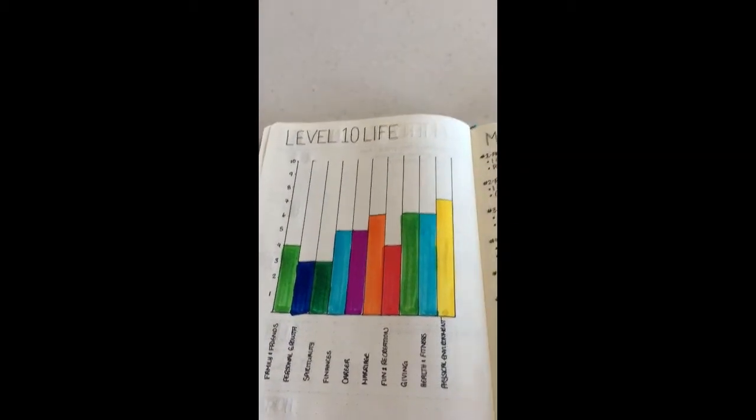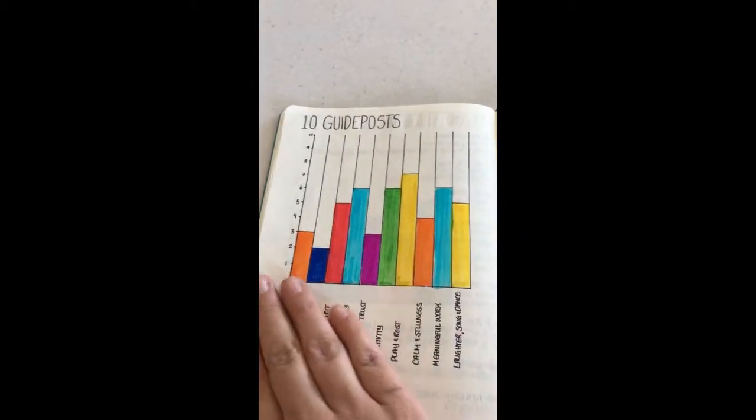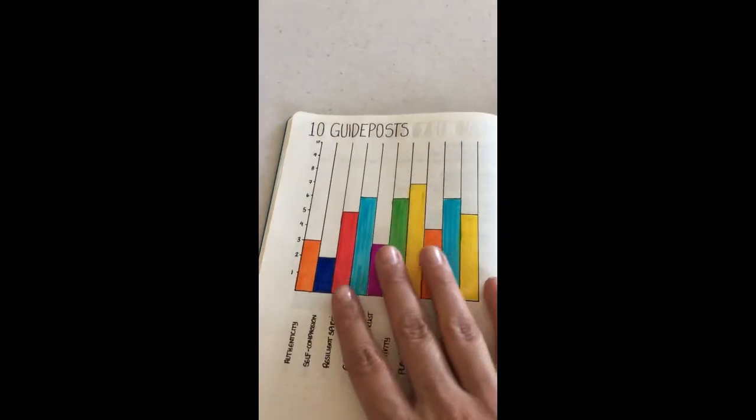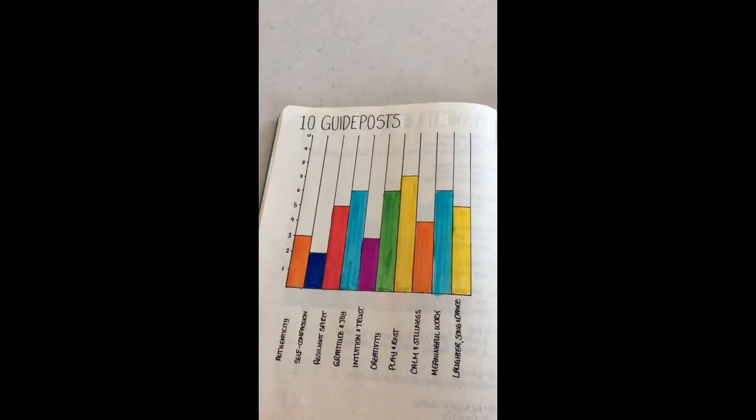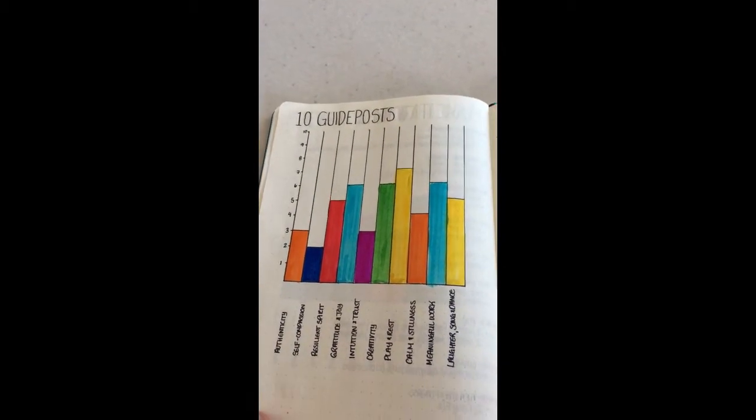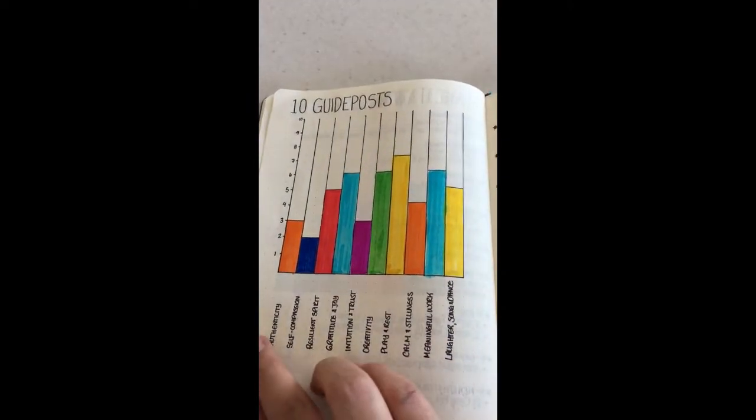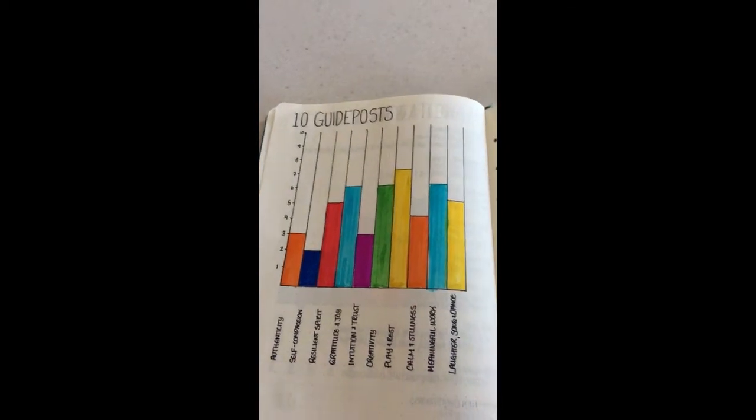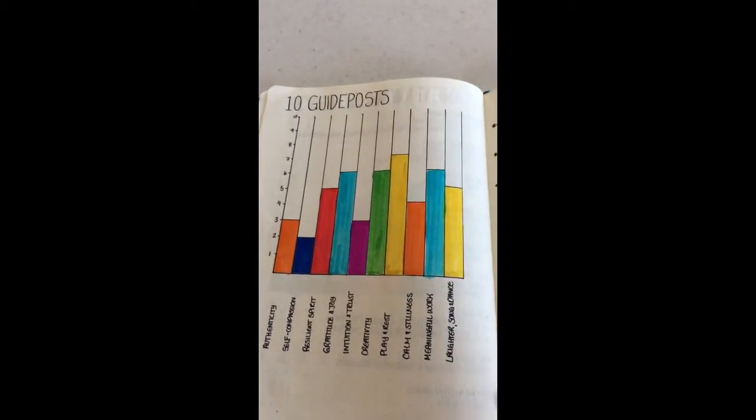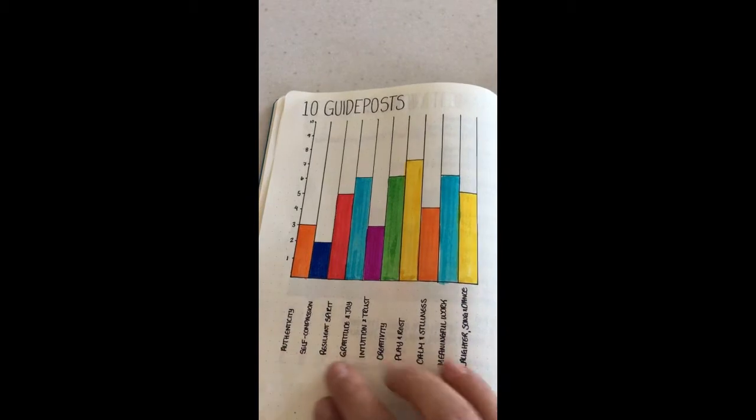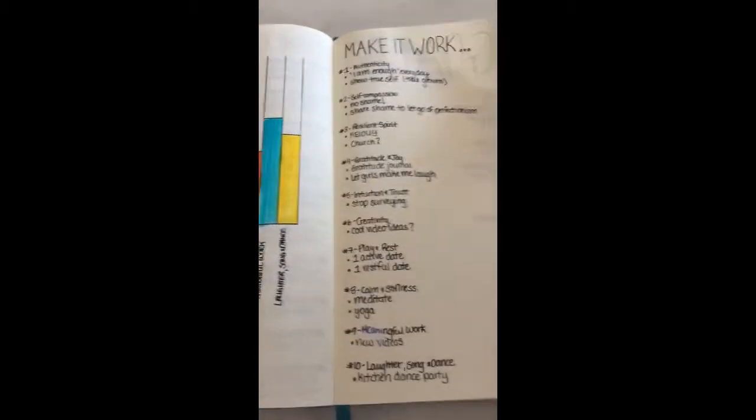Another way that you can approach that is also through the 10 guideposts, which is convenient. Again, the 10 different ways to, this is how to live a wholehearted life. This is based on a book by Brené Brown called The Gifts of Imperfection. And she breaks it down into also 10 different categories, how you can practice, have your daily practices bring you towards living a wholehearted life. So again, I wrote down the 10 guideposts and then again, how I was going to make those happen.